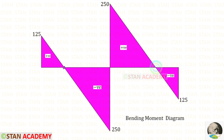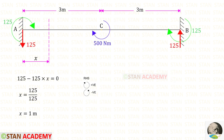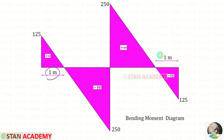There are two points of contraflexure. We make a section at a distance x from point A and find the distance. No need to make a section on the right side because the diagram is symmetrical. Setting the moment equal to 0 at the section, we can find x, which equals 1. Now we are going to end this session. Thank you for watching this video.